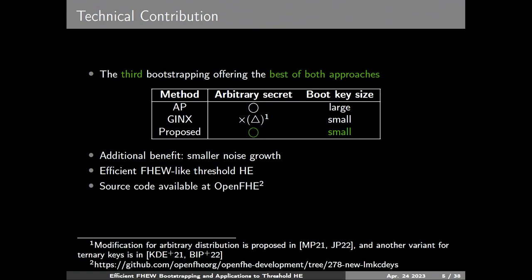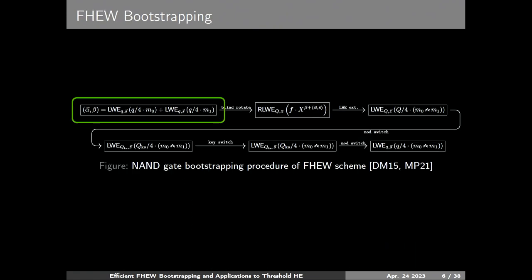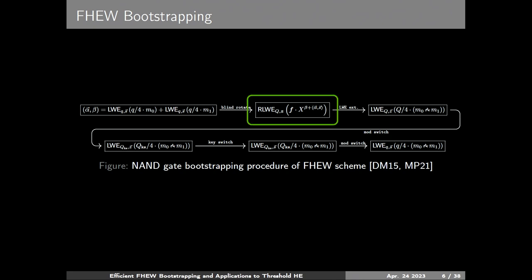As an additional benefit, it has smaller noise growth, and we can design efficient FHE-like threshold homomorphic encryption because it supports arbitrary secrets and has a simple key structure. The source code is also available at OpenFHE. This is a brief sketch of FHE bootstrapping: in FHE, the input is an LWE ciphertext, and to perform a binary gate using two LWE inputs, we first add them up.